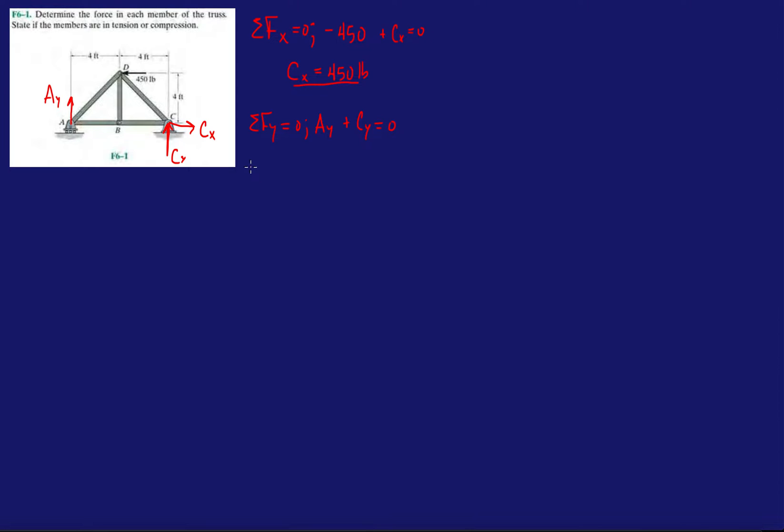And then just like before, we're just going to take a moment about A. You can either do A or B, it doesn't really matter. You're going to get the same result. So moments about A. So which forces contribute to the moment at A? Or pretty much which forces try to make this structure rotate about point A. Well, we have the 450 here. And that wants to make it rotate, you know, counterclockwise. So we're going to have 450. And extending the line of action here, we have this distance, perpendicular distance here, it's going to be four feet. So 450 times four. And then we also have CY, counterclockwise, CY times eight. Equals zero.